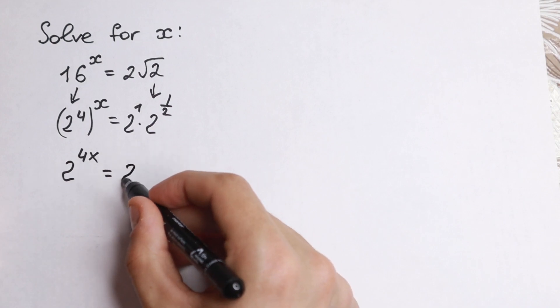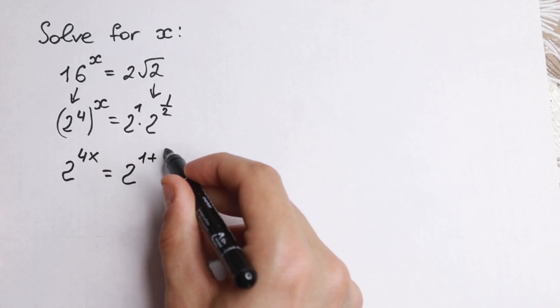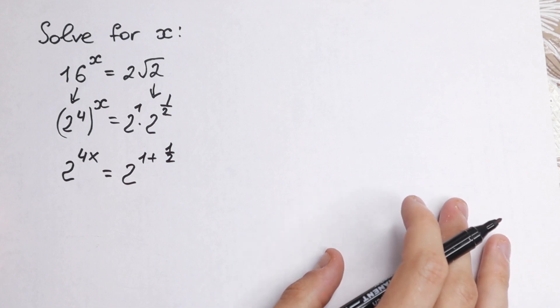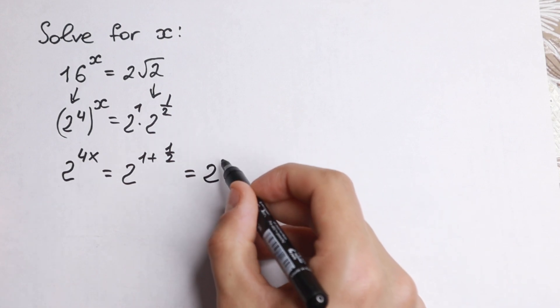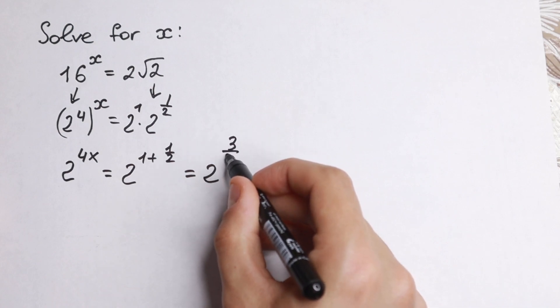So we'll have 2 to the power 1 plus 1 half, and take a look closely, 1 plus 1 half, it will be 2 to the power 3 half.